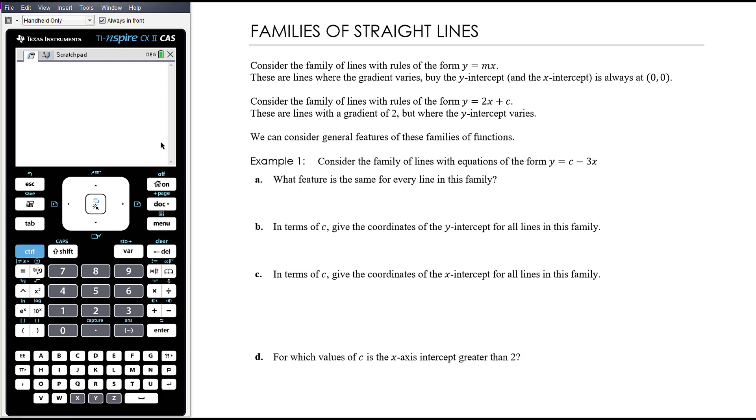So example one, let's consider the family of lines with equations of the form y equals c minus 3x. You might find it easy to think about that as negative 3x plus c. So we know they've got a gradient of negative 3 and an unknown y-intercept. So not unknown, but a changing y-intercept potentially. What feature is the same for every line in this family? Gradient of negative 3.